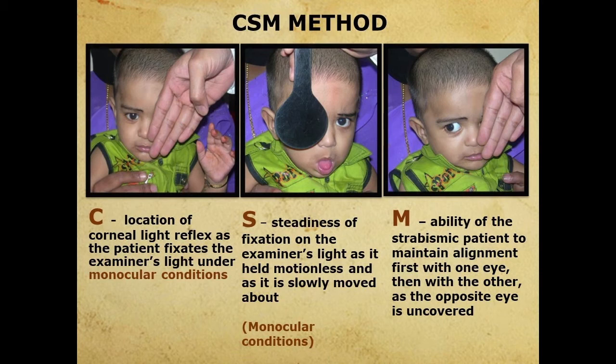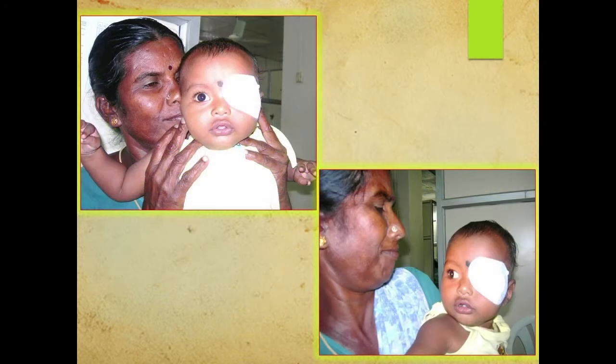In the CSM method, 'C' refers to the location of the corneal reflex — normally it is in the center of the cornea and is symmetrical. 'S' refers to the steadiness of fixation, and 'M' refers to the maintenance of fixation. If the child is not able to maintain fixation, that indicates decreased visual acuity. The examination should always be done uniocularly.